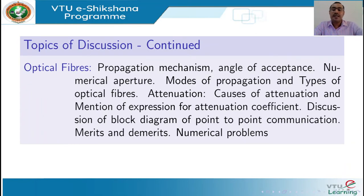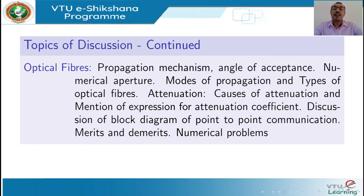In chapter 3, Optical Fibers, we discuss about the propagation of light through optical fibers and study different quantities like acceptance angle and numerical aperture. We discuss the types of optical fibers based on the modes of propagation and RI profile. We discuss attenuation due to fiber losses, and finally we discuss point-to-point communication using optical fibers, with numerical problems at the end.